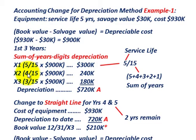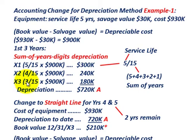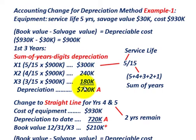For year X2, we've moved down to four years remaining, so we take the fraction 4/15 times $900,000 — that's $240,000. For year X3, it's 3/15 times $900,000, which gives us $180,000. So our total depreciation to date for the first three years is $720,000.